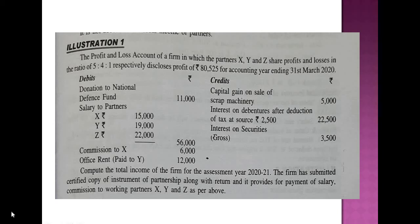In this video we're going to see how to compute the total income of a firm. In the computation of total income of a firm, you have to consider all the heads of income except the head salary. First of all you have to find out the business income. From the credit side we have the capital gain on sales of scrap machinery, which comes under capital gain, then interest on debentures and interest on security, which come under income from other sources.